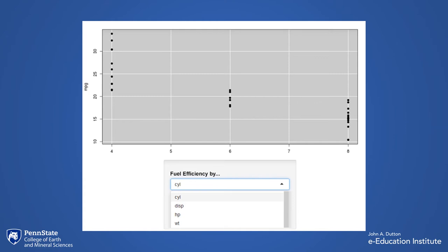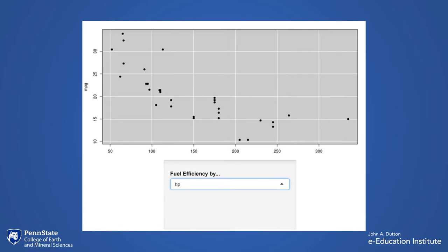The available data sets include the number of cylinders in the engine, the displacement of the engine, the horsepower of the engine, and the weight of the vehicle. This graph shows the fuel efficiency of various cars with horsepower ratings between 50 and 340 horsepower.